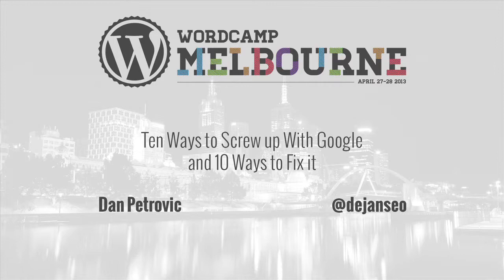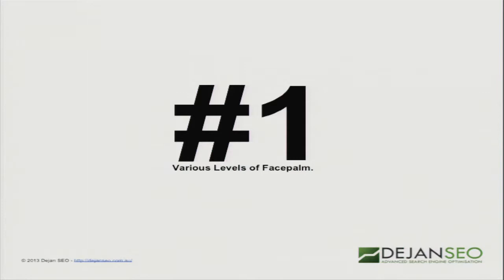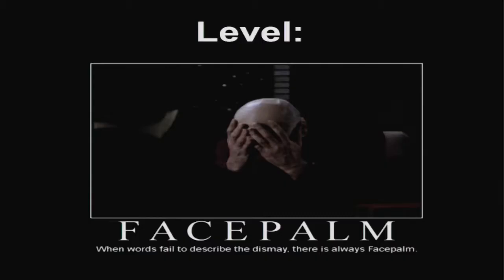We're talking about 10 ways to screw up in Google and 10 ways to fix it. The session is basically going over any number of issues that can go wrong when dealing with building and running websites. First up, I have various levels of face palm — these are the most obvious areas that people make mistakes and they have quite a dramatic impact. This is level one.